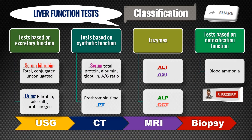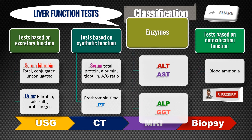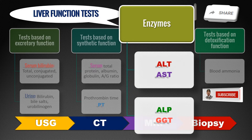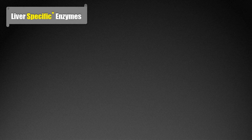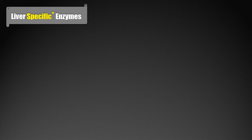The most routinely sought investigations with respect to enzymes are ALT, AST, ALP, and GGT. Coming to liver-specific enzymes, I have put asterisks above the word 'specific' because most of these enzymes are not only expressed in the liver — they are also expressed in other tissues or organs.